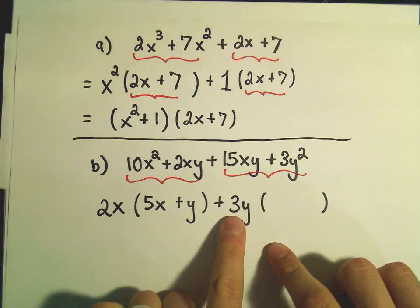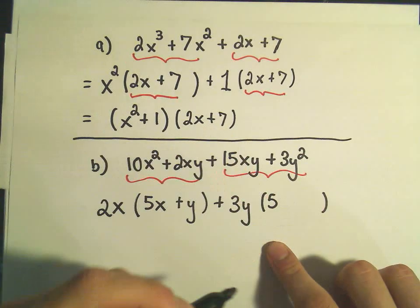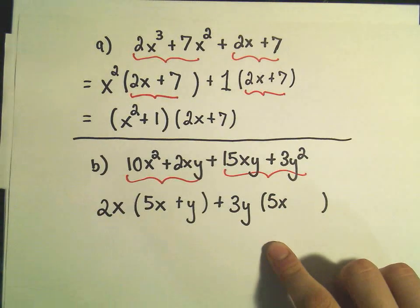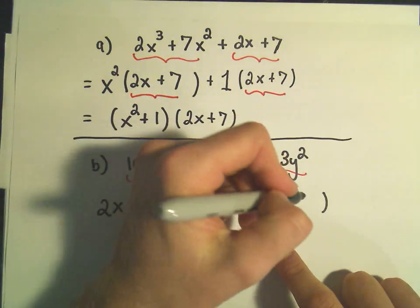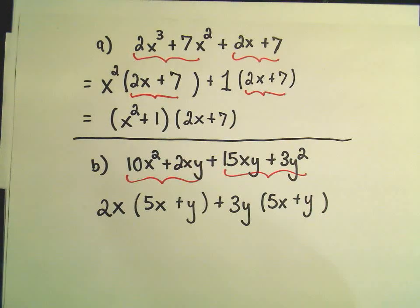And then I think, okay, well, 3 times what is 15? I guess we would need a 5. We didn't factor out the x, so I would still need that. And 3y times positive y would give me 3y squared.